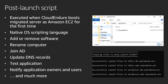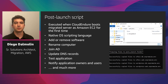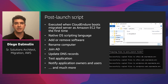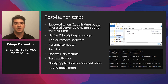CloudEndure has a very interesting capability of running scripts when it converts a server to Amazon EC2 and boots the instance for the first time. CloudEndure will run all the scripts placed in a specific folder in the source server. You don't need to learn any specific scripting language — it is compatible with native OS scripting languages such as PowerShell or Batch for Windows, or Bash scripts for Linux. You have unlimited options: renaming servers, adding or removing software, joining an Active Directory domain, adding or deleting users, updating DNS records, changing application configuration files to update database connection strings, testing if the application is up and running, sending email notifications to users about the migration, and much more.